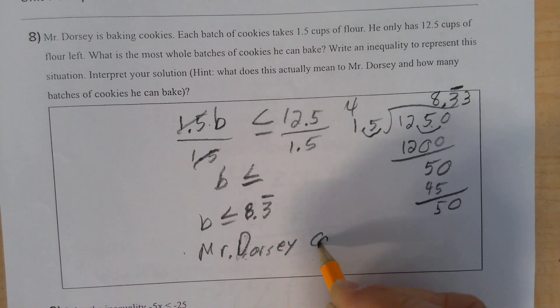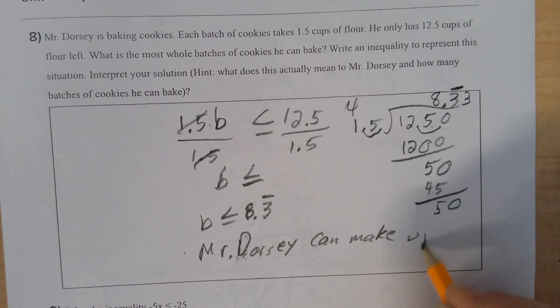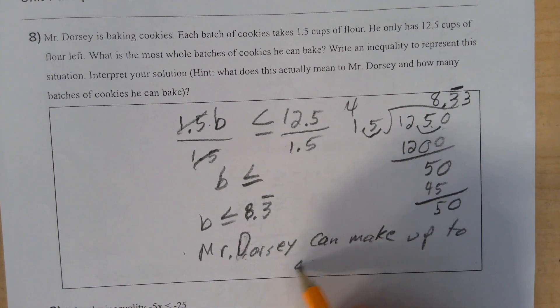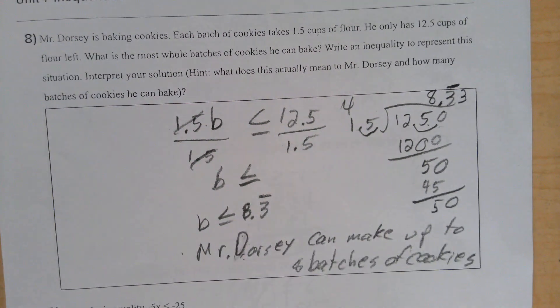Mr. Dorsey can make up to 8 batches of cookies. Can't make 9. I can make 8 because it's 8 and a third. Alright, that's number 8. Let's go. Thank you.